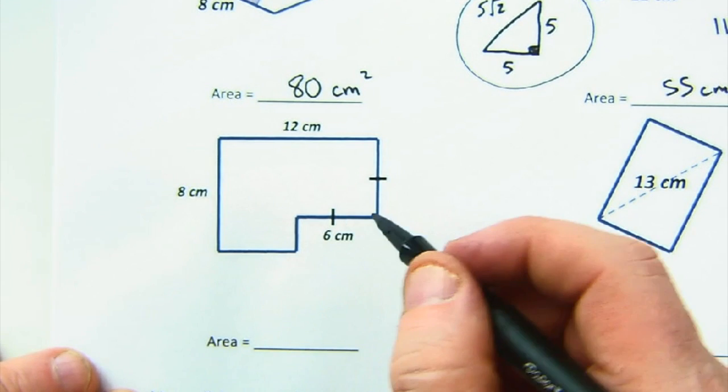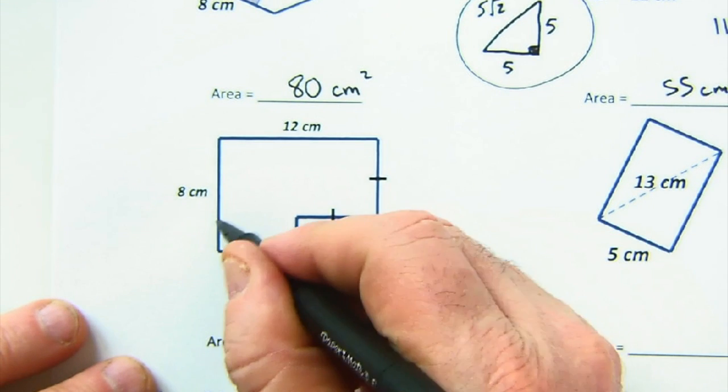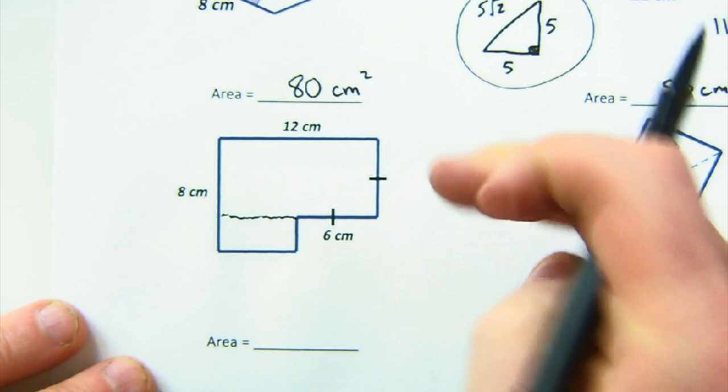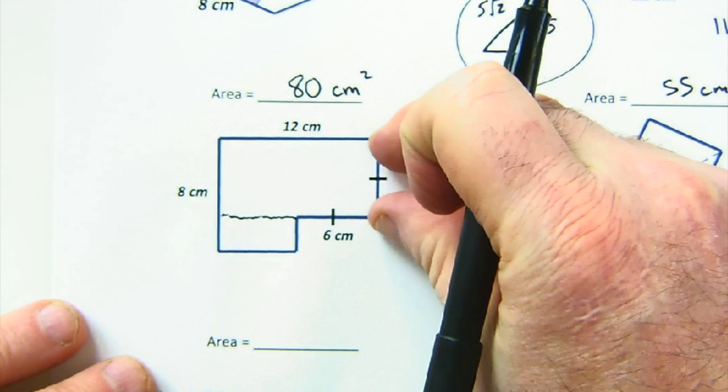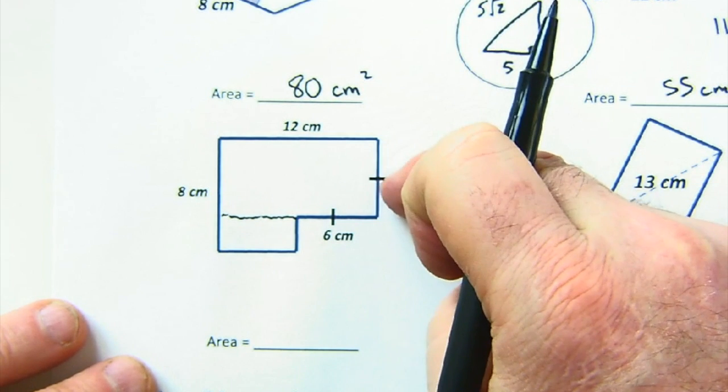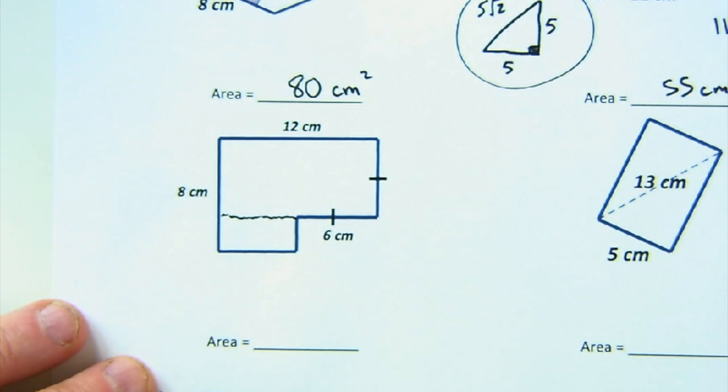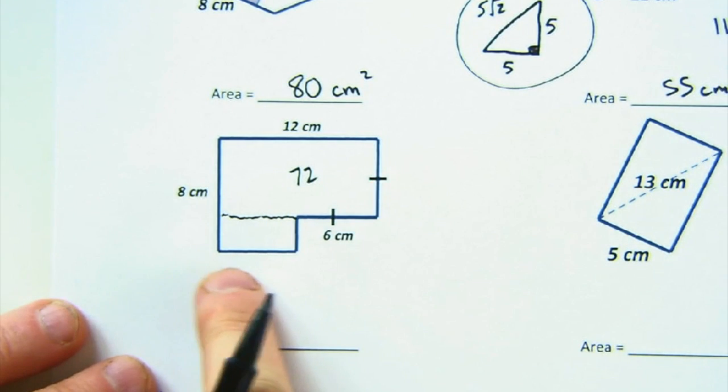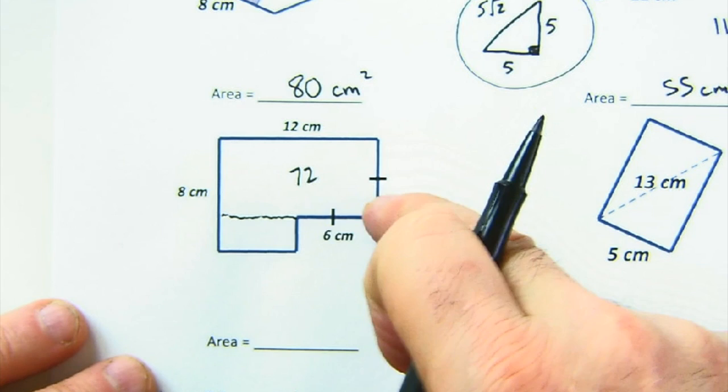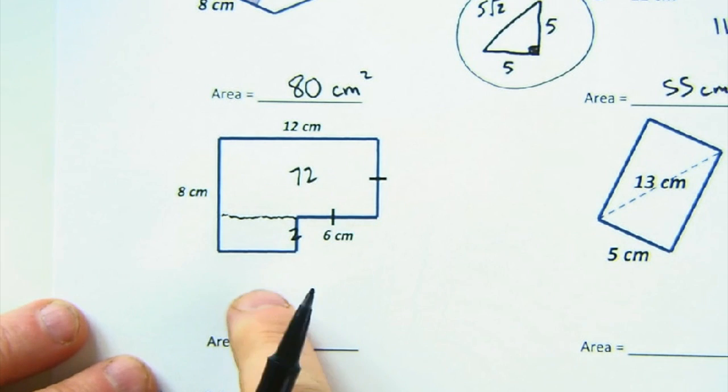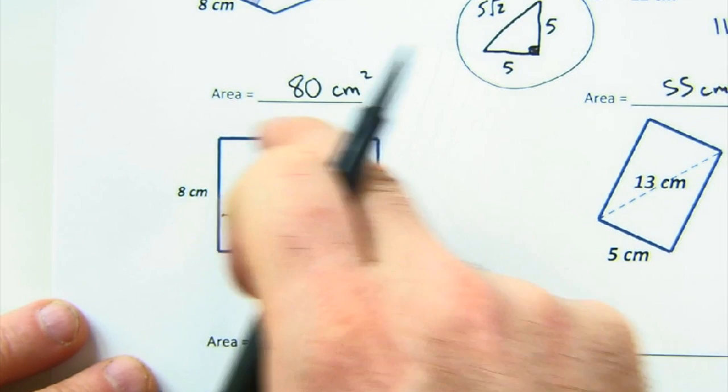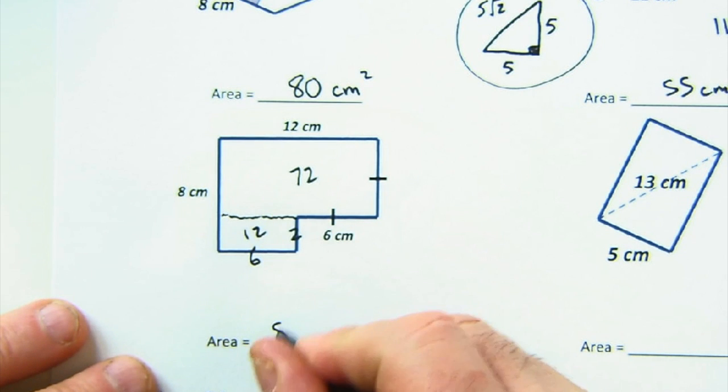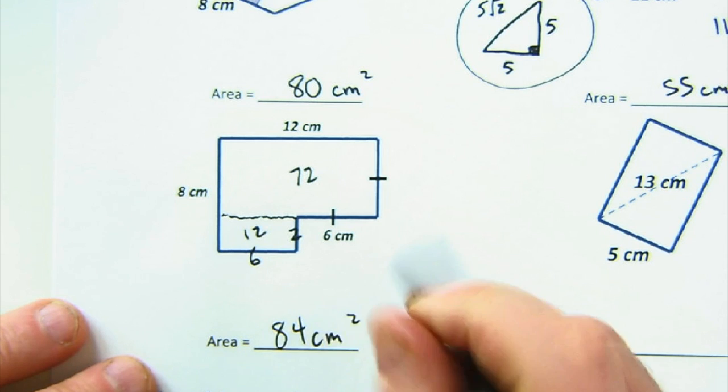Here, this is called a composite. These are fun. You can think of them in two different ways. Lots of students will draw this and go 12 times, let's see, 12 times 6. So that's 60-72. And then this would be, let's see, 8 minus 6. So this would be 2 times, let's see, that's 12 minus 6. So this would be 12 here. So we get 84 centimeters squared.